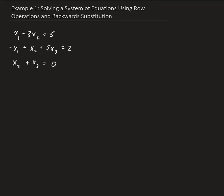In this example, we want to solve the following system using row operations and backward substitution. So first, let's put this into matrix form. For the first row, just looking at the coefficients, we're going to have 1, minus 3, and 0 — because there's no x3 in the first equation.